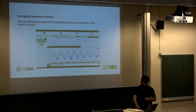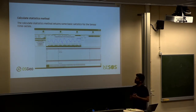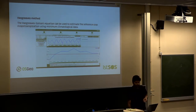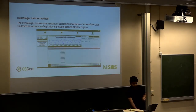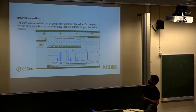There is a calculate statistics method - using these methods you can get all kinds of statistics for the time series: the minimum, maximum, and all kinds of quartile data. There is also the Hargreaves method, which is used to calculate crop evapotranspiration using climatological data.